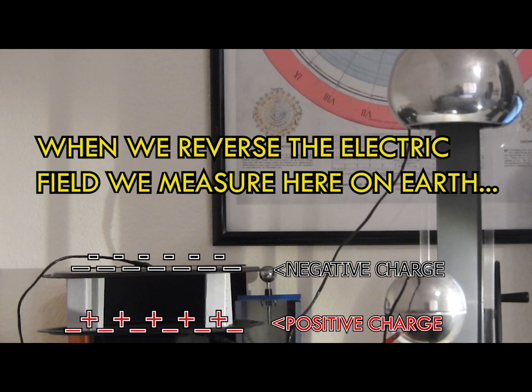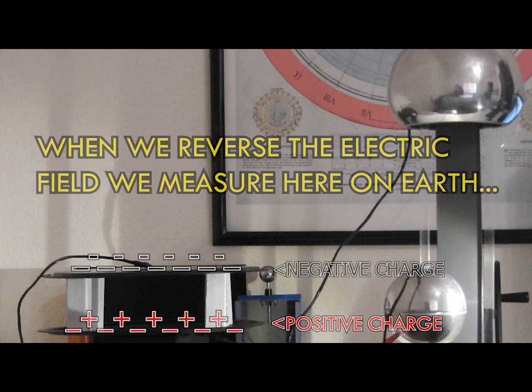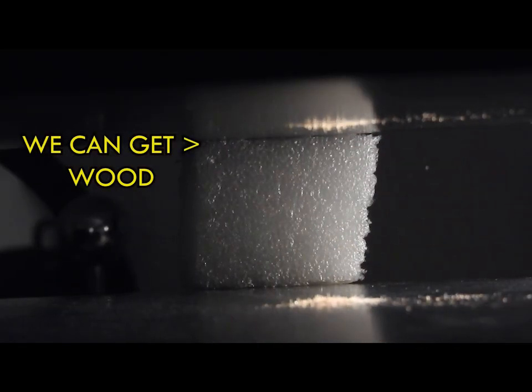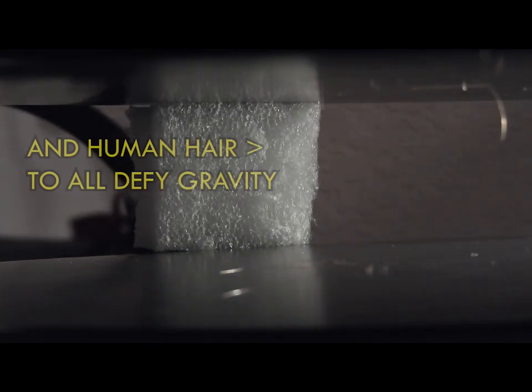When we reverse the polarity of the electric field and put a negative surface above a positive one, we can reverse this electrostatic phenomenon and get things to stick to the upper plate as if it were the ground. This works with all types of matter. You can move wood, iron filings, and even human hair with these forces.